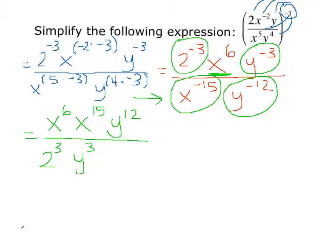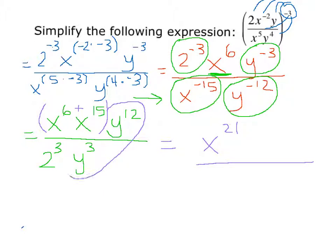Now we need to make sure that we simplify this completely. We notice that in the numerator we have x to the 6th times x to the 15th, and since they have like bases and are being multiplied together, we add those exponents together, giving us x to the 21st power. Then for y, we notice we have a y term in both the numerator and denominator. Using our quotient rule for exponents, we subtract the exponent in the denominator from the exponent in the numerator, so we have y to the 12th minus 3, which gives us y to the 9th power.